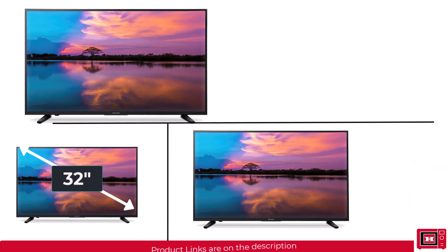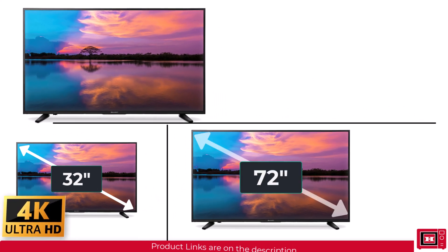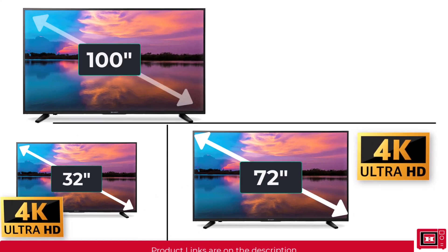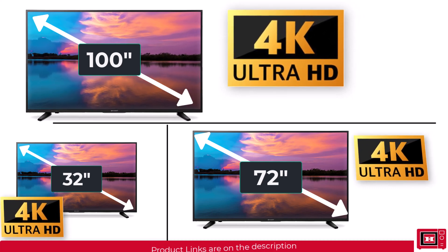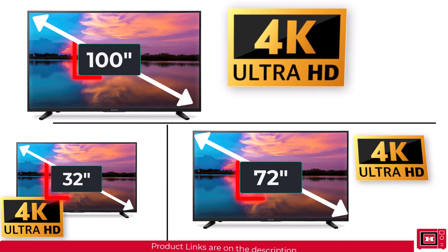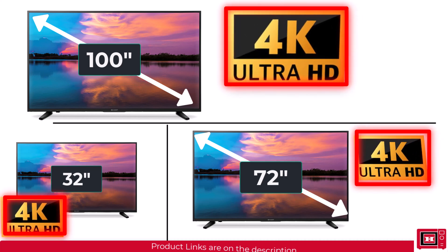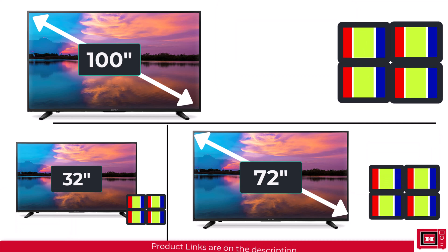This is why a 32-inch TV can have a 4K resolution, a 72-inch TV can also have a 4K resolution, and even a 100-inch TV can also have a 4K resolution. These three TVs may have different sizes but they have the exact same number of pixels. The only difference would be the pixel size and the pixel spacing.